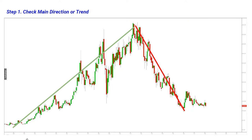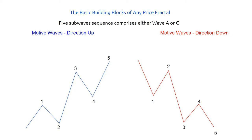Once you identify the main direction of the trend, you want to check whether you can recognize a standard five-wave pattern. Five-wave patterns are motive waves — they confirm the direction of the trend. The basic pattern looks like: one, two, three, four, and five in a trend up, and one, two, three, four, five in a trend down. The key takeaway is the nature of wave three — it is elongated. Wave three is normally the longest part of the motive move, so you are always looking for an elongated wave three in the middle of the move.